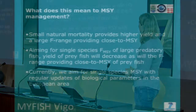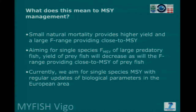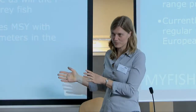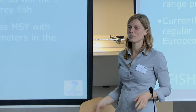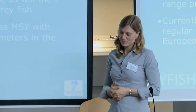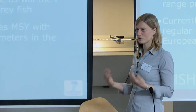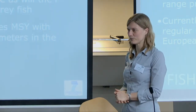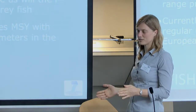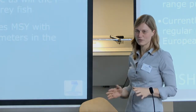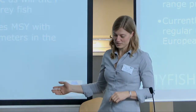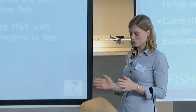So what does it mean for MSY management compared to the single-species case? If you have a small natural mortality, it will give you a higher yield, and you have a large range of fishing mortalities that gives you close to MSY — a pretty large space to play in. But if you add more species or more predators to your system and increase your predator stocks, as we're doing when we rebuild stocks, you will actually increase natural mortalities for many of the prey stocks. And their range of close-to-MSY fishing mortalities is going to decrease.